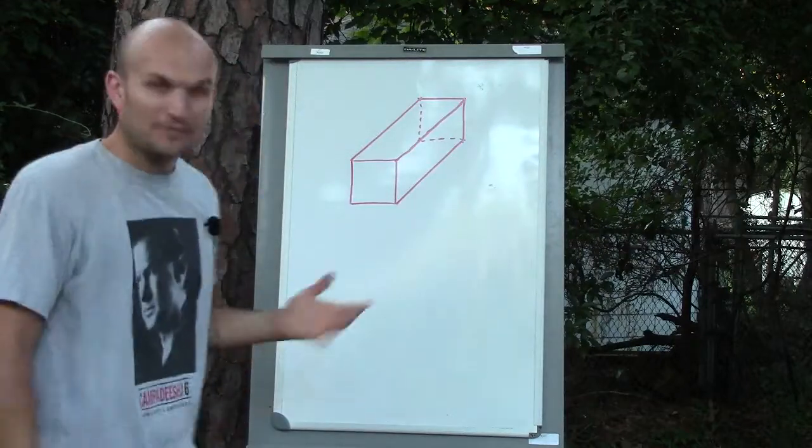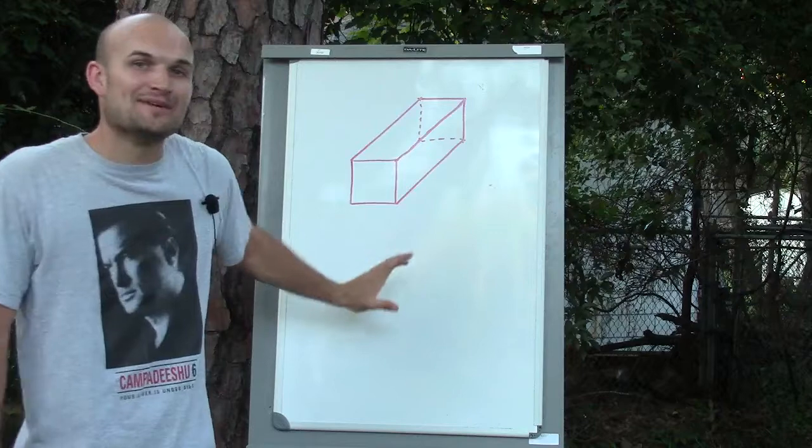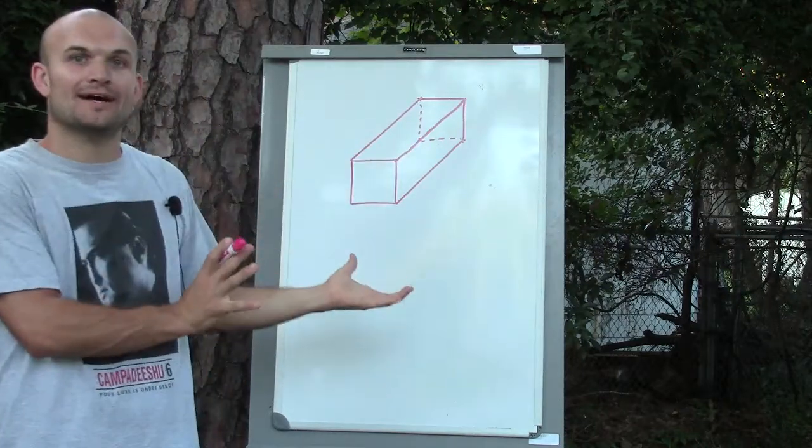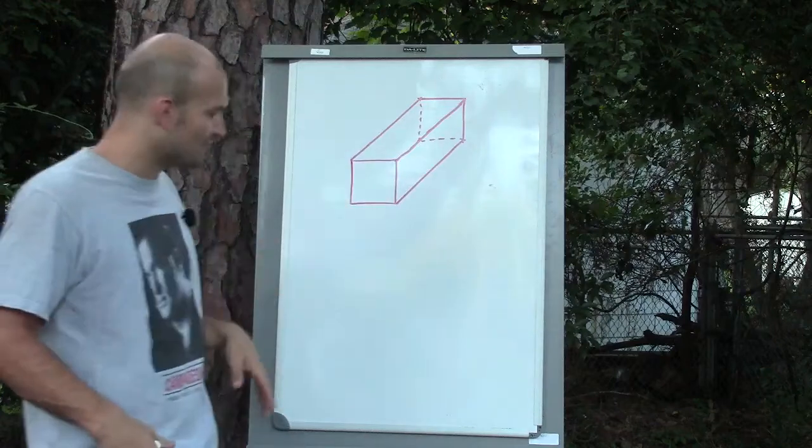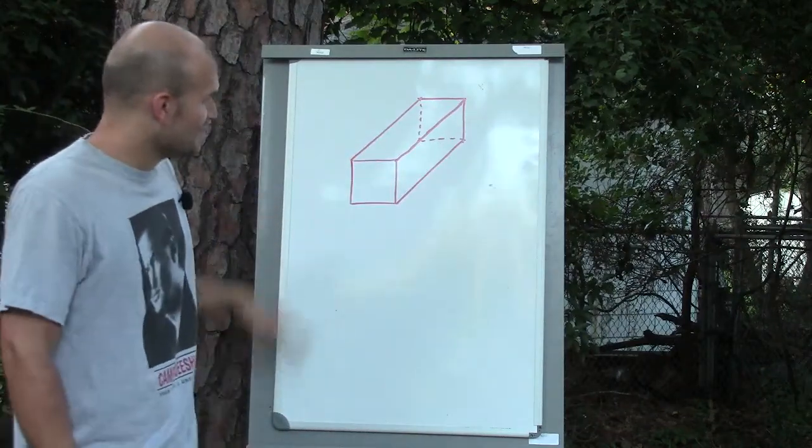Welcome. All right, so what we want to do for this problem is determine what is the net. So they give us a three-dimensional figure. I tried to do my best, hopefully you can kind of visualize what this box looks like as a three-dimensional figure even though it's written on a two-dimensional board.